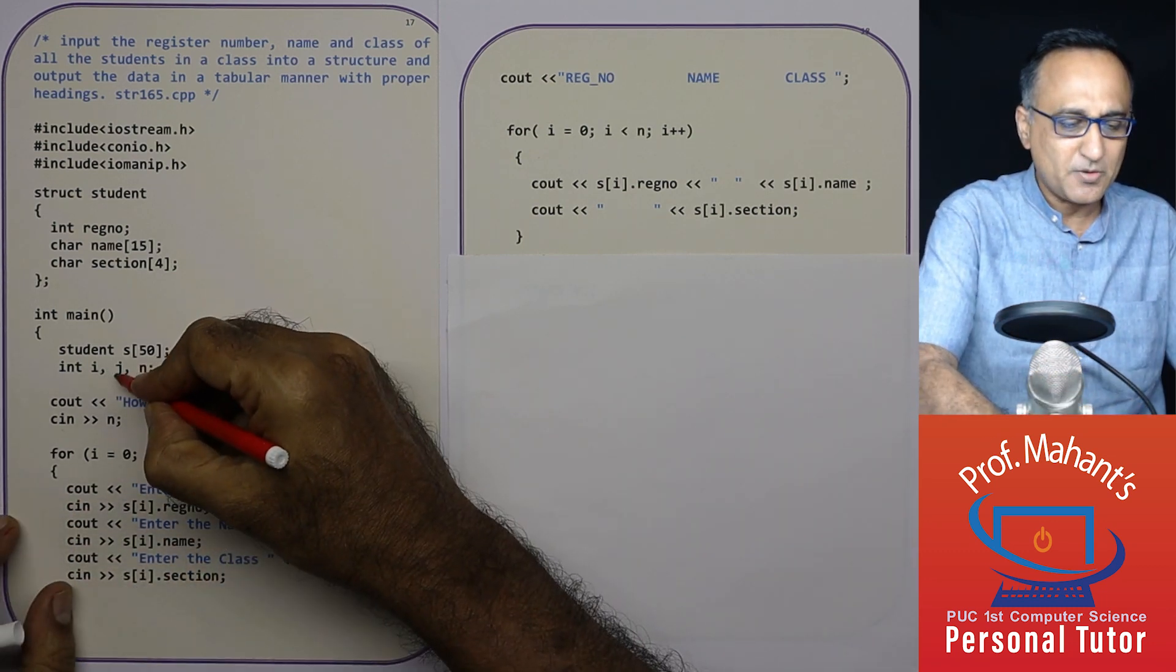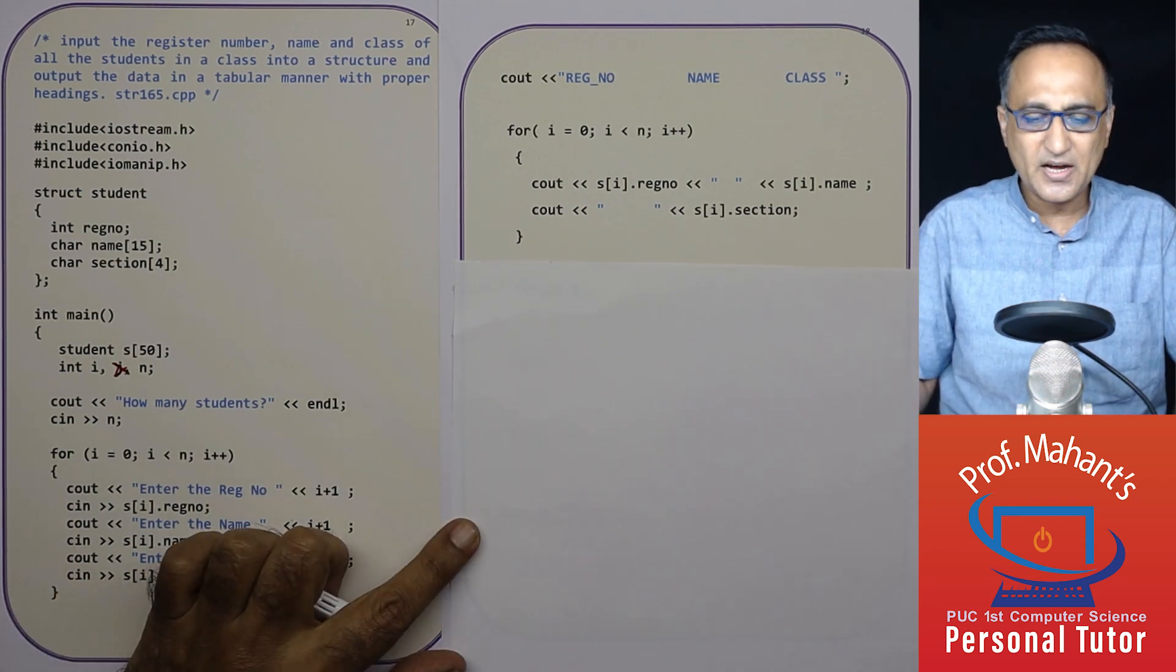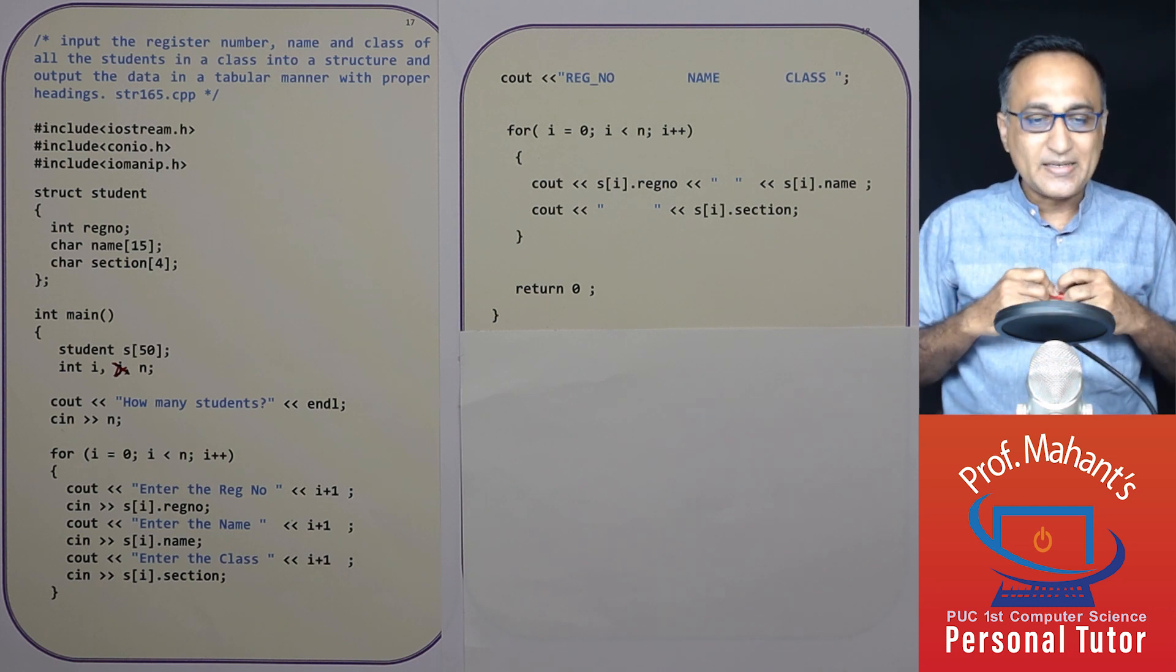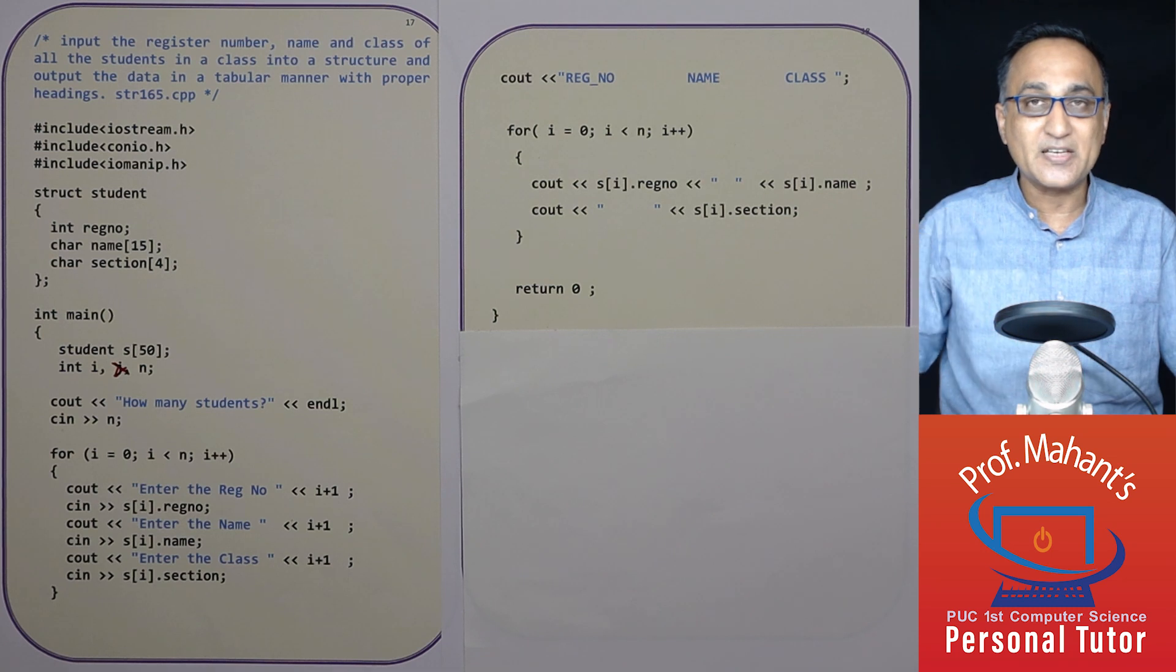So I'll just strike out j because I don't think j has ever been used. So j is an unnecessary variable here I am not using. So this hopefully should have given you an idea how you can read and print names, registration number and class of up to 50 students in a class.